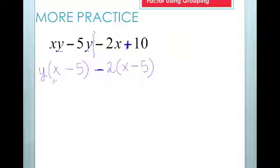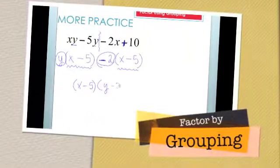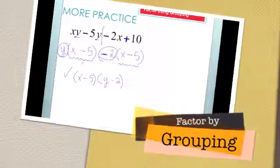Now I factor out the greatest common factor again. This time I have a greatest common factor of x minus five, and I'm left with y minus two. I'm finished with my factorization.